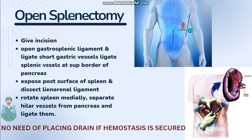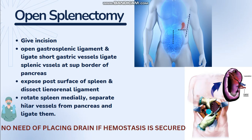Thoracoabdominal incision is usually used for a large spleen which is adherent to the diaphragm. After dissecting the abdominal wall, we will dissect the gastrosplenic ligament, open it, and ligate the short gastric vessels at the superior border of the pancreas. Then we will expose the posterior surface of the spleen, dissect the renal ligament, rotate the spleen medially, and separate the hilar vessels from the pancreas and ligate them.